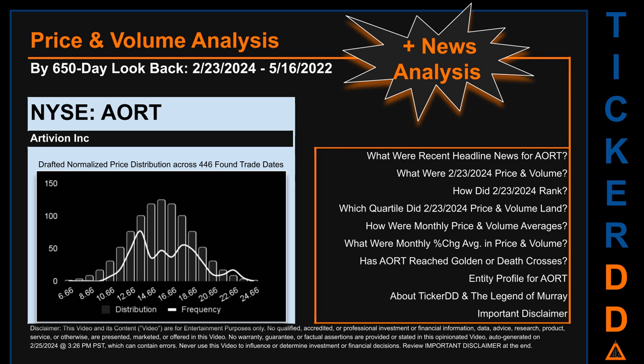The chart shown on this page is our initial attempt at studying the price for AORT after dynamically normalizing price distribution across those discovered trade dates. The bar chart is the generated distribution, and the overlaid line graph, if generated, is the frequency of the prices on the x-axis. This is just a drafted, in-progress observational model. Before we jump into price and volume analysis, let's look at recent headlines for AORT.